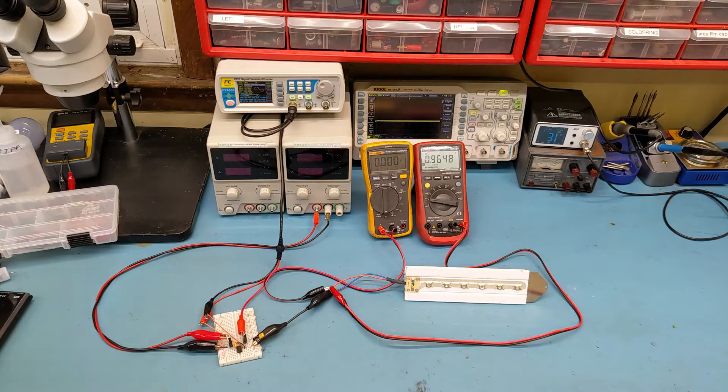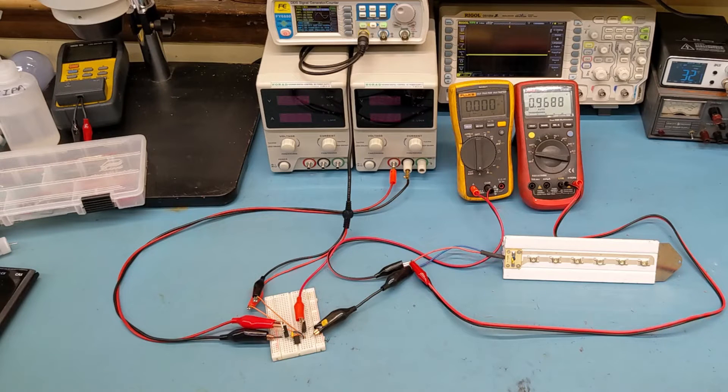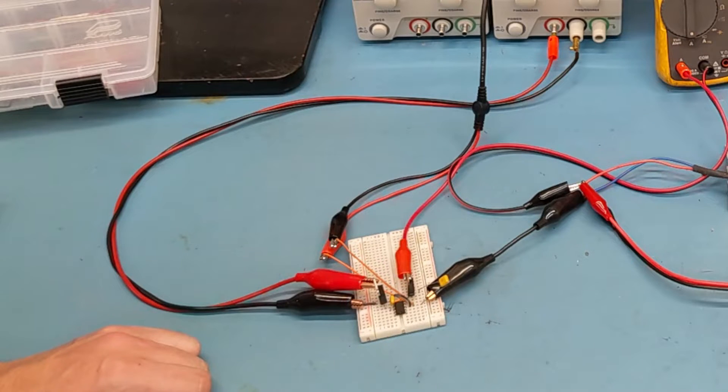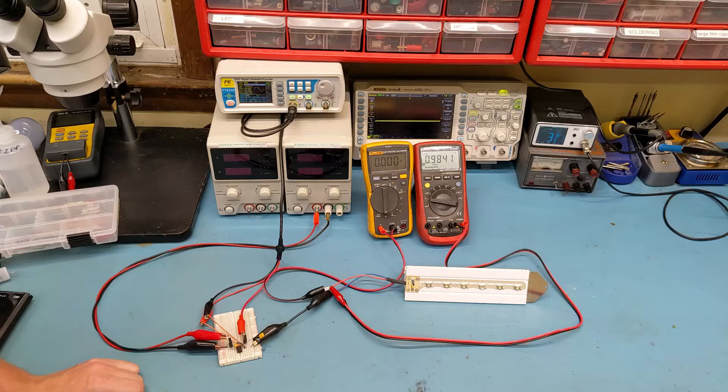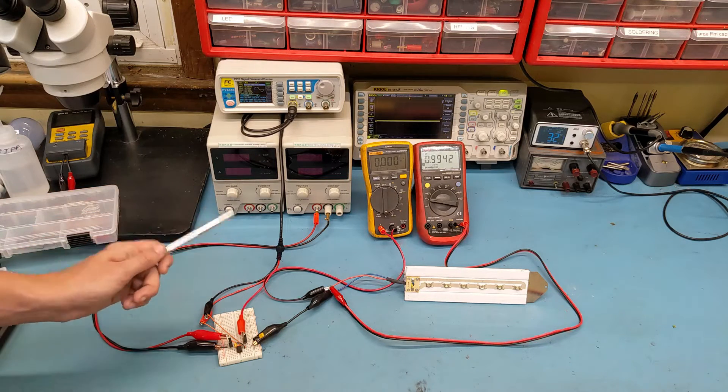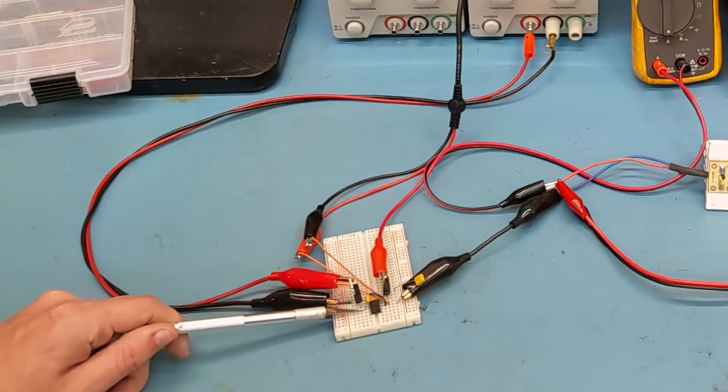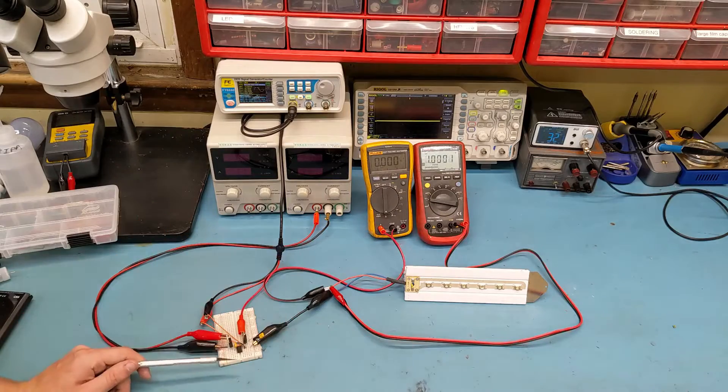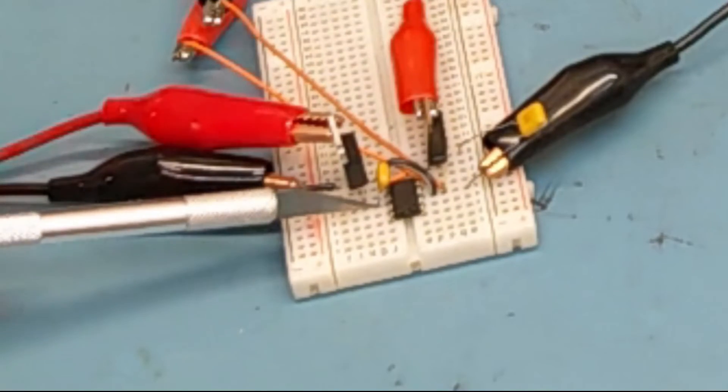So, did you guys notice anything strange about this circuit? Something is off about it. Are you able to tell what it is? If you guessed that this circuit is missing a connection to the VCC rail for this gate driver IC, you would be correct. This gate driver IC is not powered.